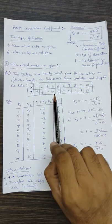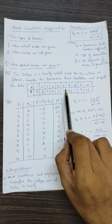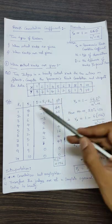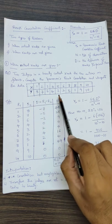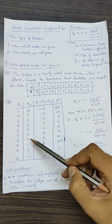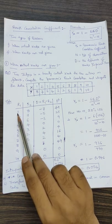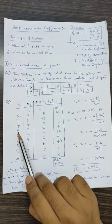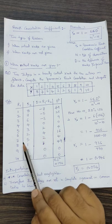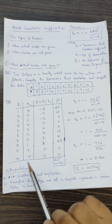When ranks are given, consider judge x scores as r1: 1, 2, 3, 4, 5, 6, 7, 8, 9, 10, and judge y scores as r2: 8, 7, 6, 4, 3, 2, 5, 1, 9, 10. As per the formula, d is the difference between ranks: 1−8=−7, 2−7=−5, 3−6=−3, 4−4=0, 5−3=2, 6−2=4, 7−5=2, 8−1=7, 9−9=0, 10−10=0.